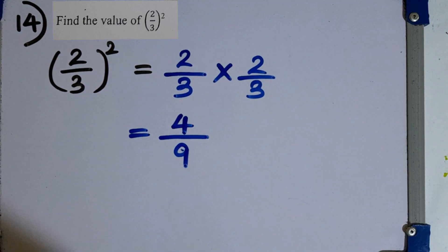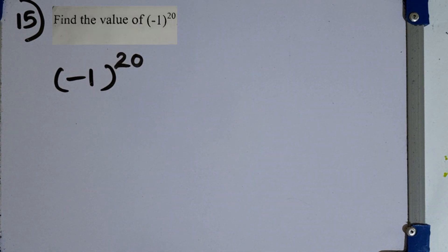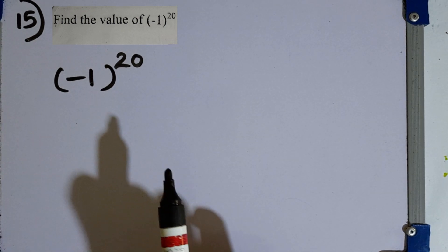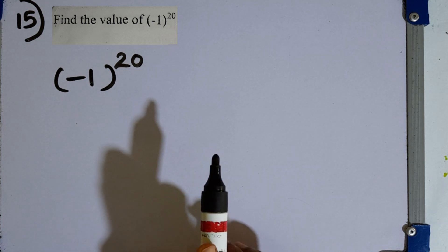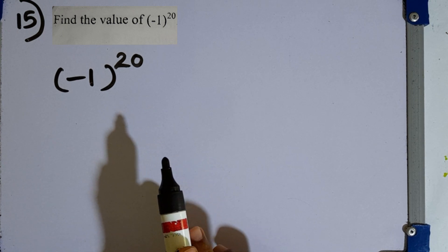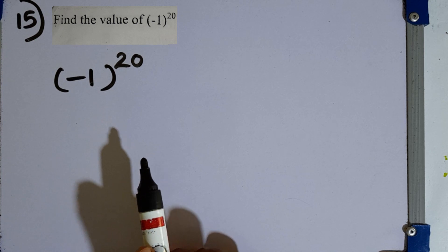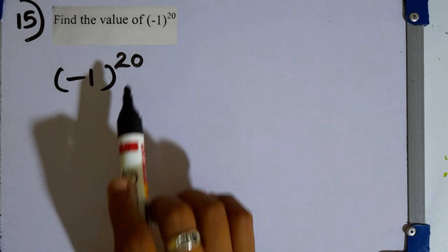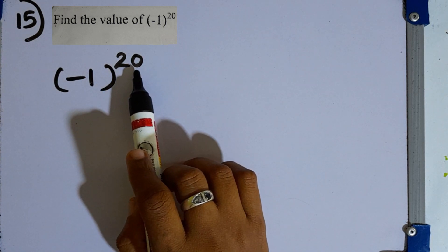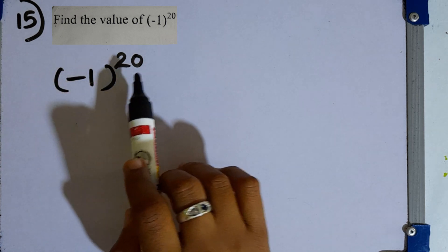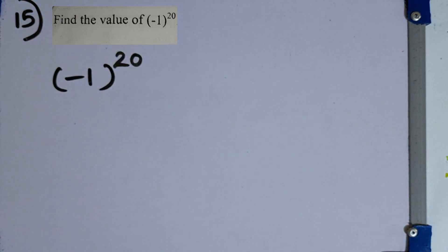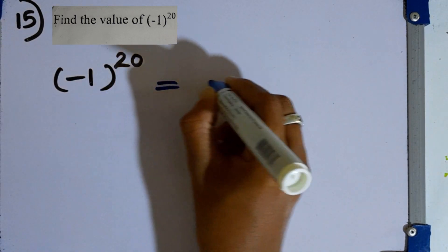Question number 15. Find the value of minus 1 to the power 20. An even power of a negative integer is a positive integer, while an odd power of a negative integer is a negative integer. Here the power is 20, which is even. And since 1 multiplied by itself any number of times gives 1, the answer is 1.